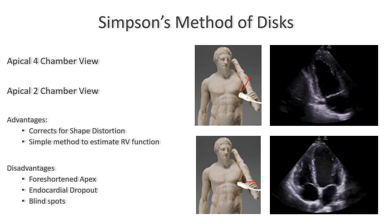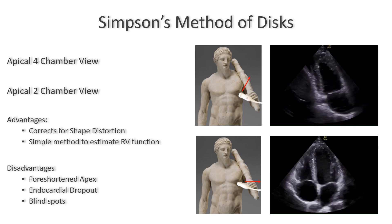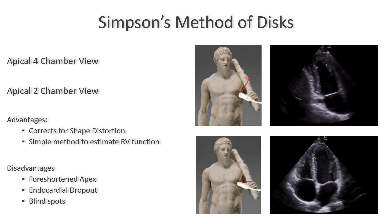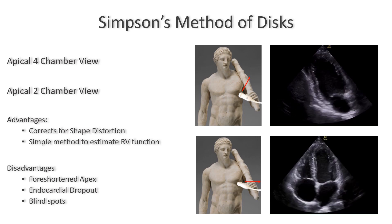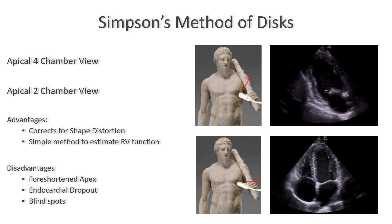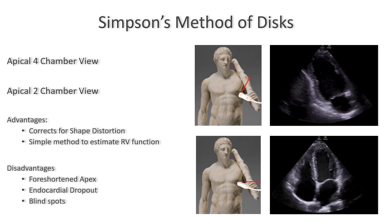Since we are calculating the left ventricular volume from only two views, if there are shape distortions in other areas, they will not be included in the measurements.